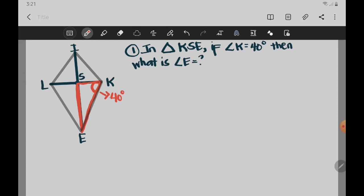So if that is 40 degrees, then what will be the measure of this angle, angle E? As we all know, the sum of all angles of a triangle is equal to 180 degrees. The sum of all angles is 180 degrees. This is when it comes to triangle.